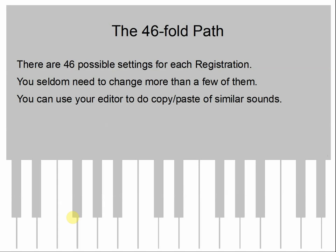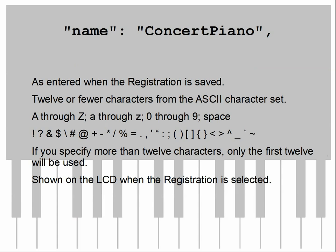For each of the 30 registrations in the file there are 46 possible settings, and the good news is you seldom need to change more than a few. Because you're on the computer, you can do copy and paste of most settings to make similar sounds. The first setting is the name — this is what the piano prompts you for if you save a registration on the piano. It's 12 or fewer ASCII characters: basically uppercase and lowercase a through z, zero through nine, space, and a bunch of punctuation. If you use more than 12 characters in the text file, only the first 12 will be used. If you use fewer, that's fine, and that's actually an advantage over entering the name on the piano where you have to explicitly space over unwanted characters.